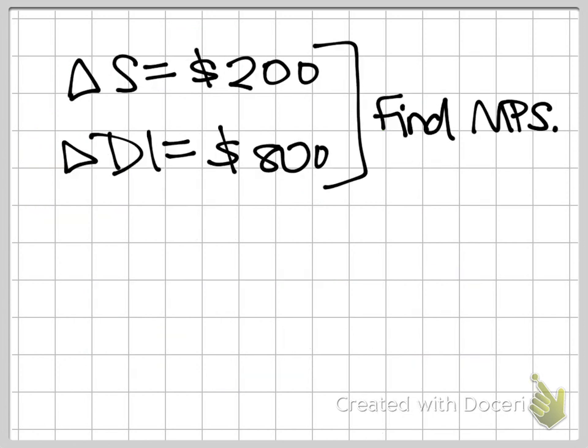So I'm going to work through a couple of quick examples related to this. Here's example number 1. Suppose that savings increases by $200 when disposable income increases by $800, and I ask you to find the MPS. So this one's pretty straightforward.